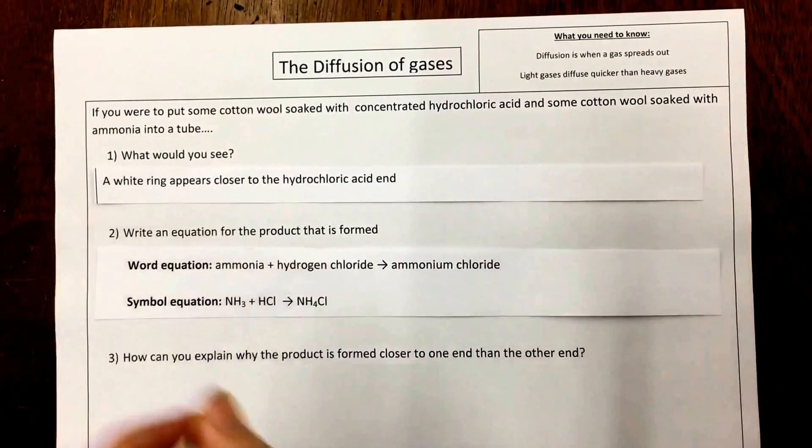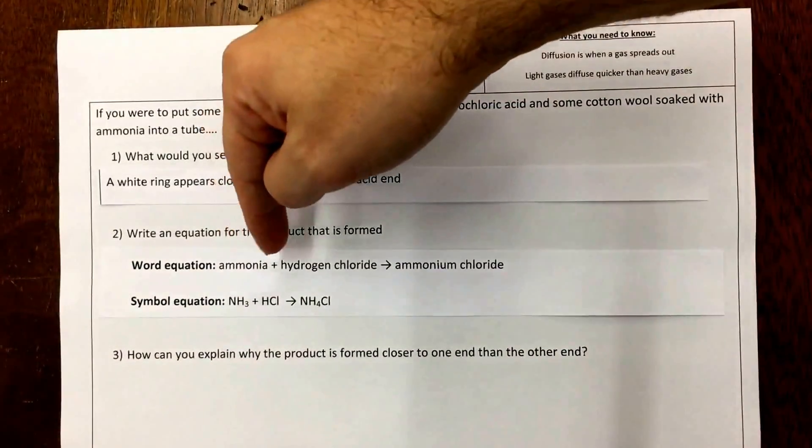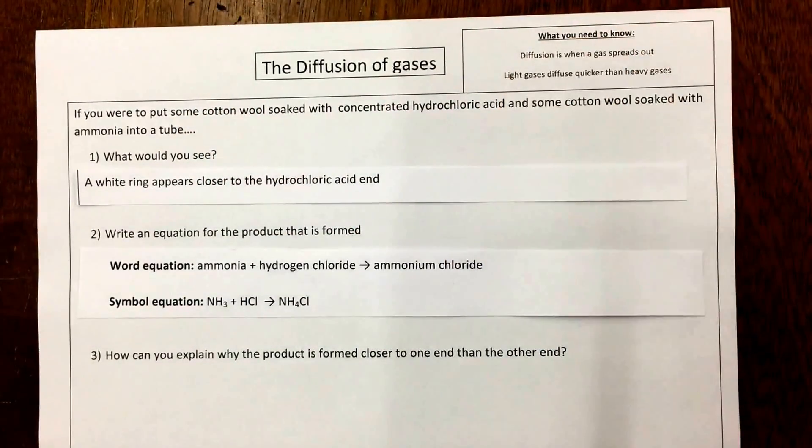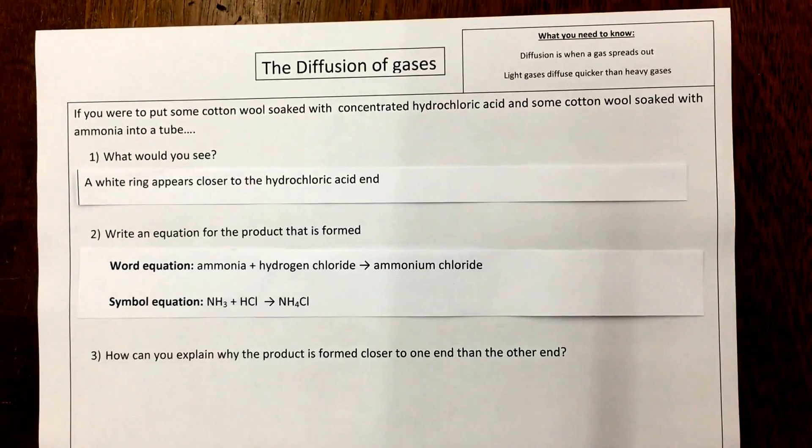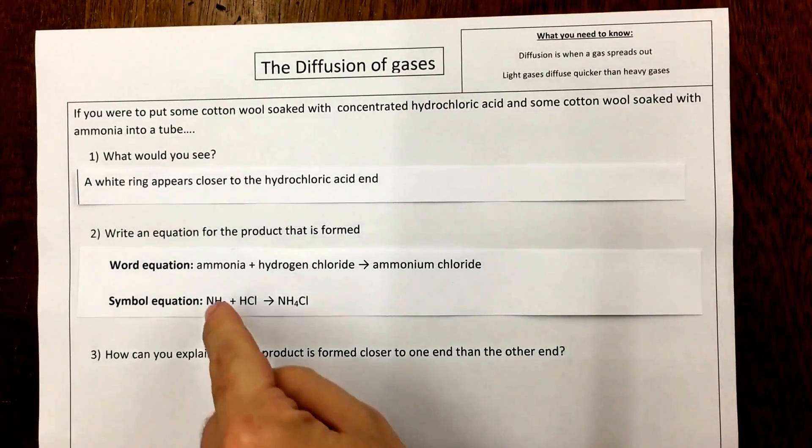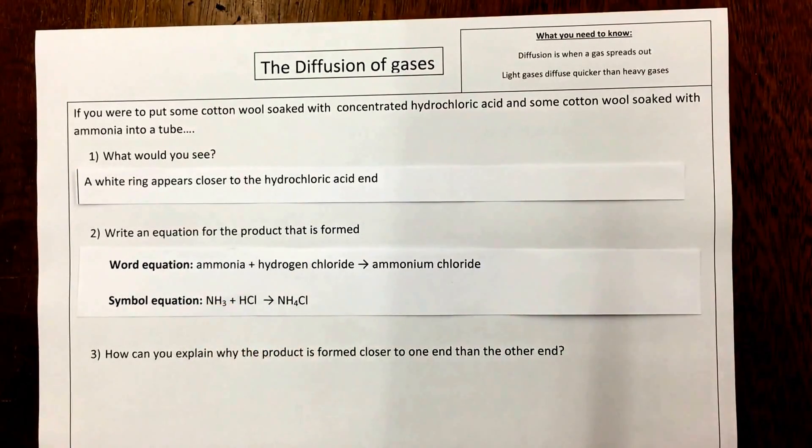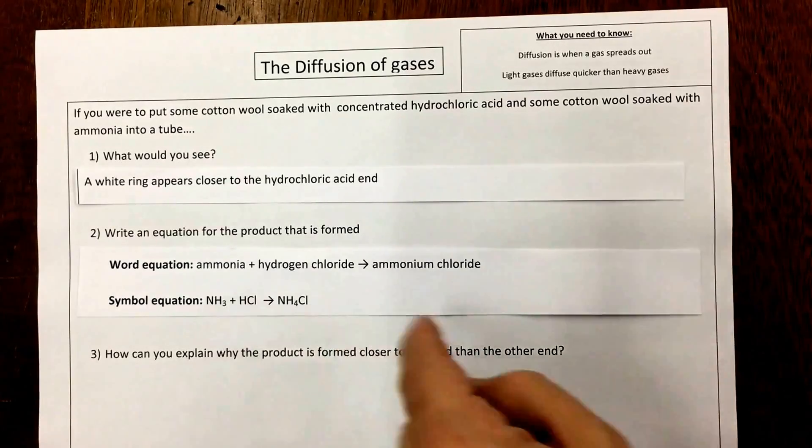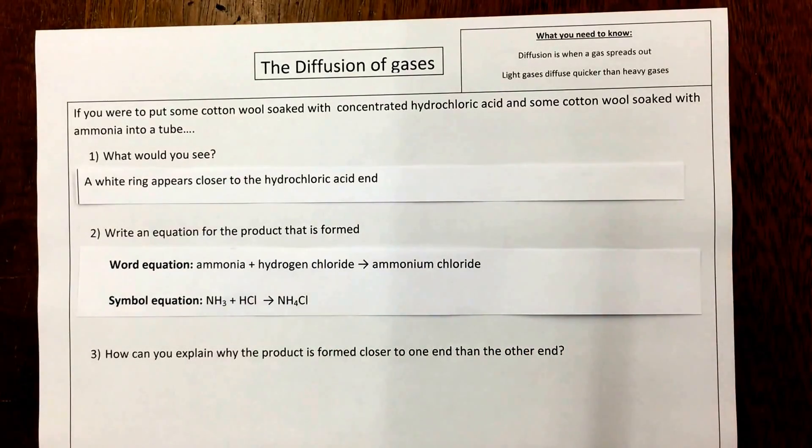So we could write a word equation, which would be ammonia and hydrogen chloride goes to ammonium chloride. Or the symbol equation would be NH3, which is ammonia, plus HCl, which is hydrogen chloride, goes to NH4Cl, which is ammonium chloride.